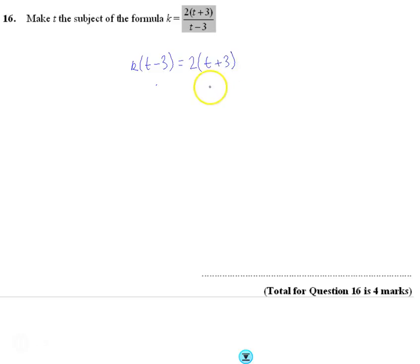Now I'm going to expand the brackets because I want to get any expression with t in it on the left-hand side and anything without t on the right-hand side. Expanding the brackets gives kt - 3k = 2t + 6.